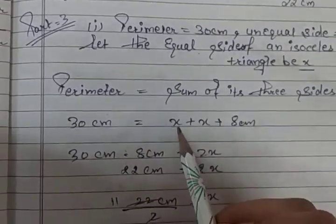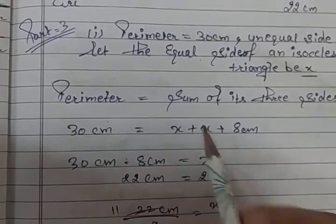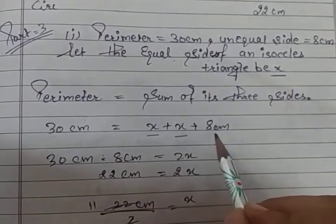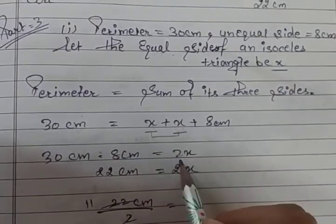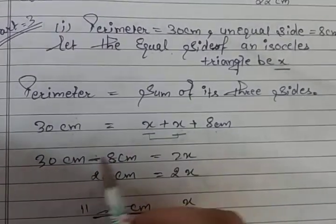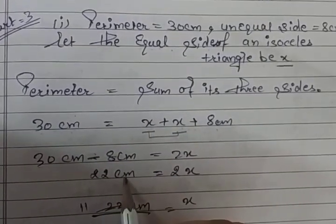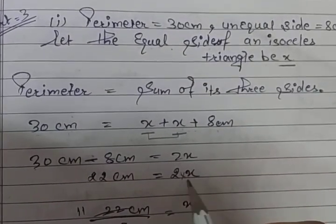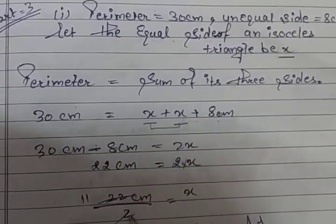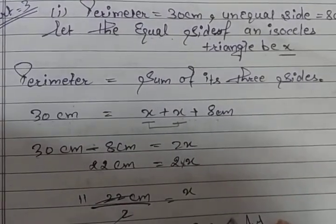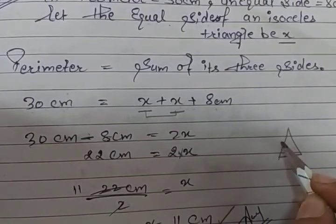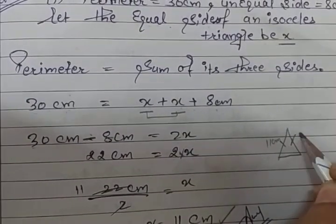Let the equal side of the isosceles triangle be x. Then the perimeter equals sum of its three sides: 30 = x + x + 8, which gives 30 = 2x + 8. Shifting 8 to the other side: 2x = 30 minus 8 = 22 cm. Dividing both sides by 2, you get x = 11 cm. So both equal sides are 11 cm each.